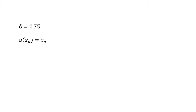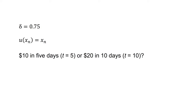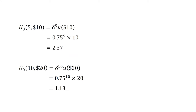For this next example, suppose we have an exponential discounter with discount factor delta equals 0.75 and utility function for each period u of xn equals xn. Would this agent prefer $10 in five days, that is at t equals 5, or $20 in 10 days, that is at t equals 10? The discounted utility of the $10 in five days is u0(5,10) equals delta to the power of 5 times utility of $10, equals 0.75 to the power of 5 times 10, which equals 2.37. The discounted utility of the $20 in 10 days is u0(10,20), which equals delta to the power of 10 times utility of $20, which equals 0.75 to the power of 10 times $20, which equals 1.13. Discounted utility is higher for the $10 in five days; the agent will prefer to receive $10 in five days.